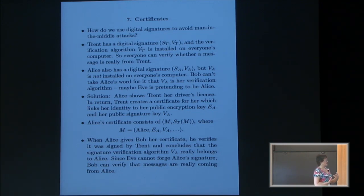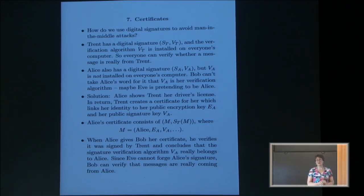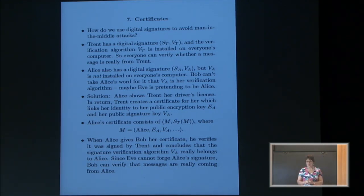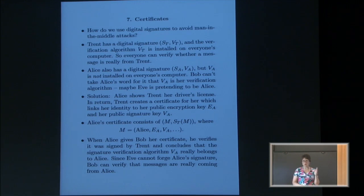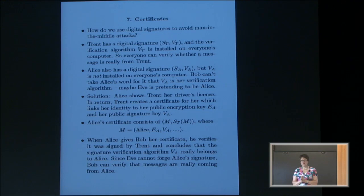Alice's certificate consists of the message — containing her name, her keys, date, etc. — together with Trent's signature of that message. When Alice gives Bob her certificate, he verifies it was signed by Trent and concludes that verification algorithm really does belong to Alice. When Alice signs and sends a message, he concludes the message really is from Alice. As for who Trent is: Trent has to be trusted, so it could be determined by standard bodies, or for an internal system, somebody in corporate headquarters. There are also secret sharing techniques to split secrets between more than one party.